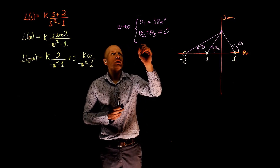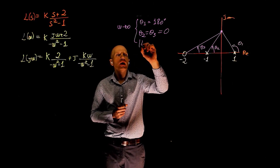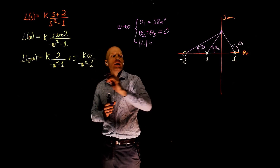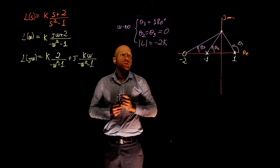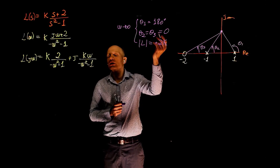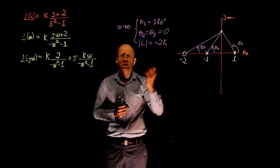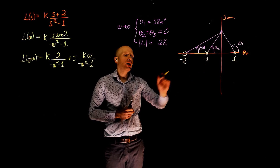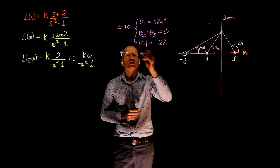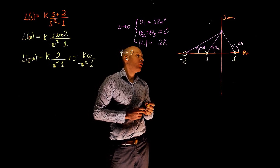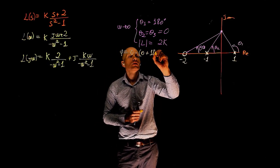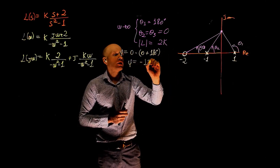What is the magnitude of the transfer function when ω tends to zero? The imaginary part goes to zero and this gives us −2k, but since we're talking about magnitude, it's simply 2k — the magnitude is always positive. The negative sign comes from the angle of 180°. The actual phase of the transfer function is the sum of angles of all zeros minus the sum of angles of all poles: θ₃ (which is zero) minus (θ₂ + θ₁) = 0 − (0° + 180°) = −180°.